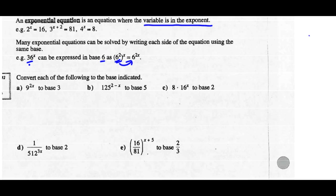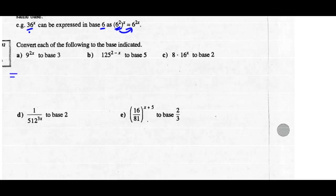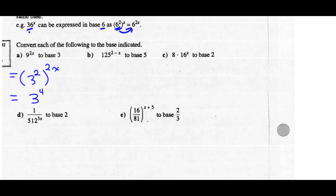Let's complete Example 2: convert each of the following to the base indicated. Part A: 9 to the 2x, convert to a base of 3. Well, 9 to the 2x — instead of 9, we use a base of 3, so 9 is written as 3 squared. Now our exponent laws say keep the base and multiply the exponents. So 9 to the 2x is the same as 3 to the 4x.